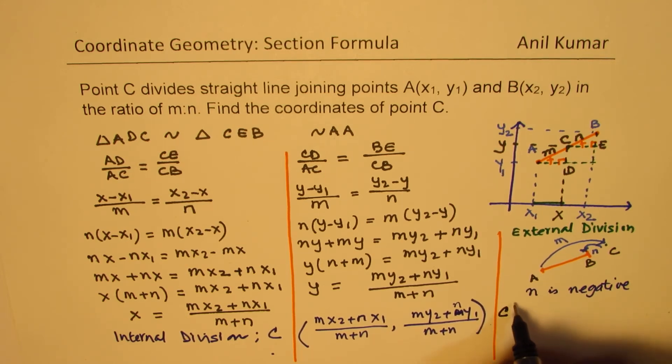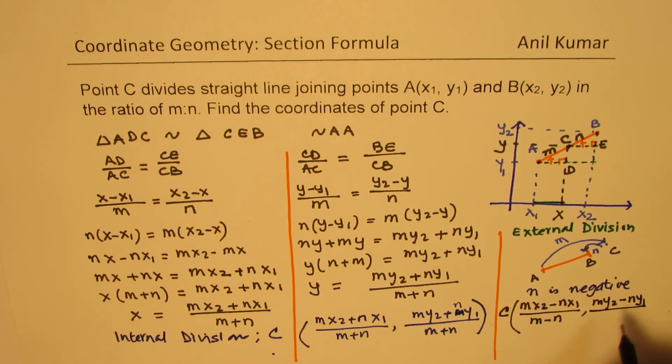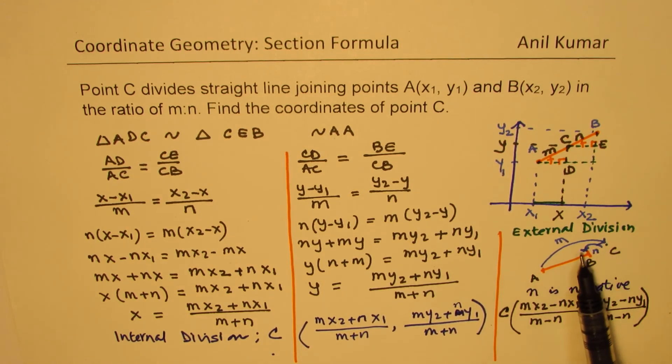the point C will be (mx2 minus nx1) over (m minus n), and the y value will be (my2 minus ny1) over (m minus n). So for external division, the formula changes a bit, n will be negative, and if you replace n negative in your equation, you get your formula.